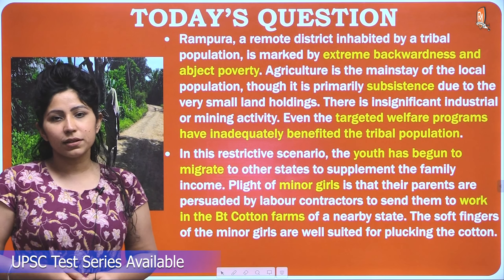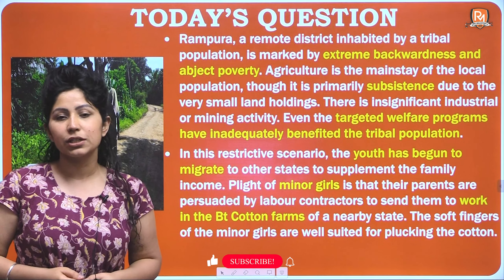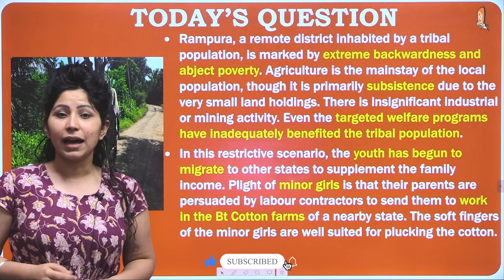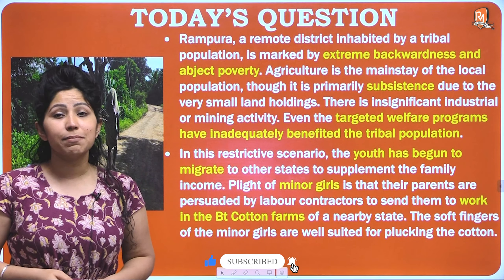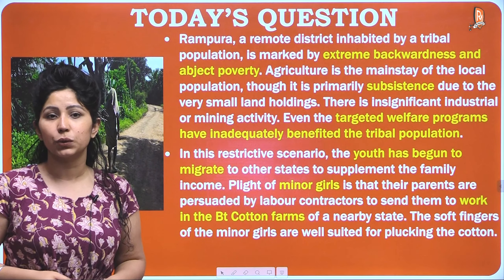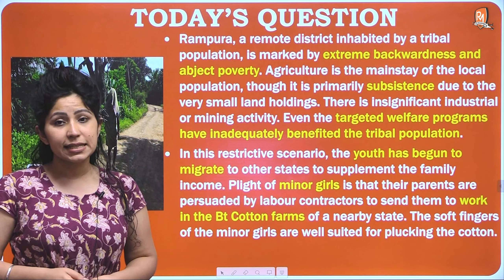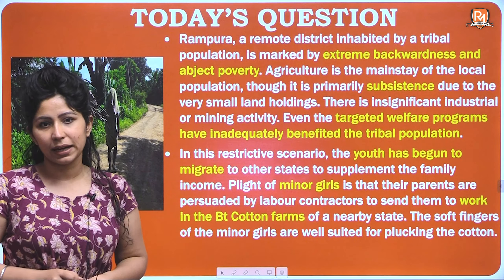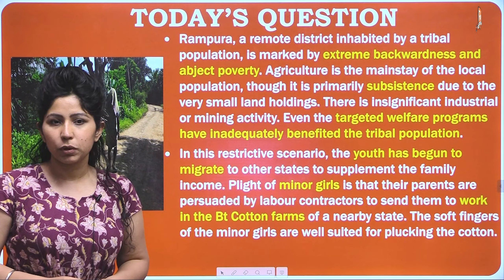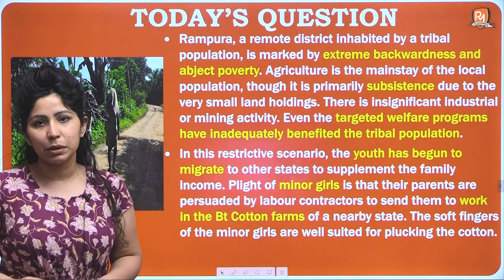Rampura is a remote district inhabited by a tribal population. It is marked by extreme backwardness and abject poverty. Agriculture is the mainstay of the local population, though it is primarily subsistence due to very small land holdings. There is insignificant industrial or mining activity. Even the targeted welfare programs have inadequately benefited the tribal population.